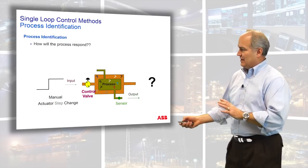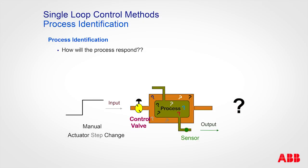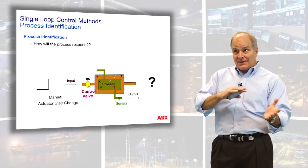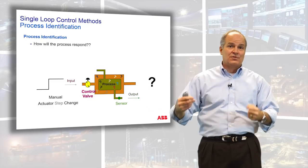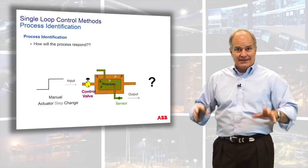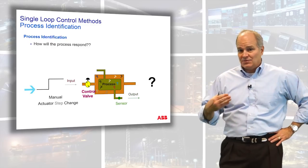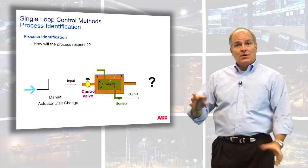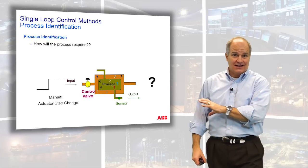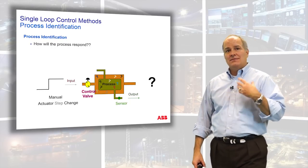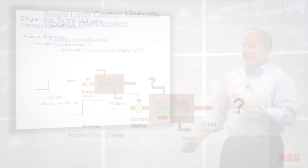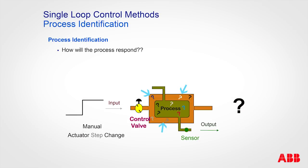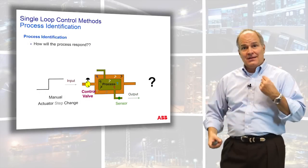A bump test is where you inject energy into your process. This heat exchanger is one that shows up a lot because it's easy to visualize, but it could be your foot on an accelerator, a steering wheel, a valve and a flow, or a level. Process identification is a method to determine the probability that if I make an input of a certain percentage, the output will respond in a certain way — it has to be repeatable and predictable. We're making a manual change to the actuator and watching what happens. In some industries this just isn't allowed, but we'll talk about how you could go about it. You have to inject energy into the process and let it tell you — that's process identification.